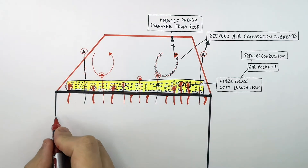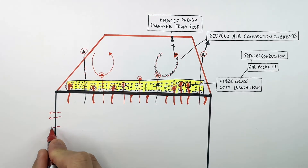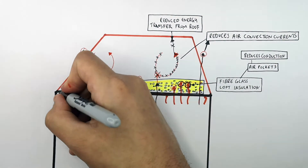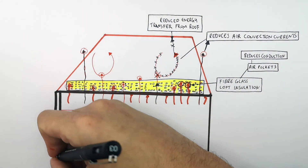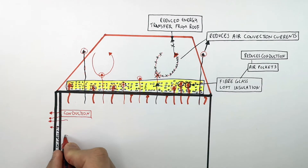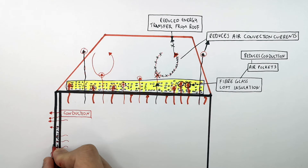Thinner walls have a higher thermal conductivity, meaning energy can be conducted through the material more quickly. A thick wall with an air cavity has two layers of brick with an air gap in between. Energy is transferred across the air cavity by convection and then conducts through the outer wall — this process takes much longer because air is an insulator.